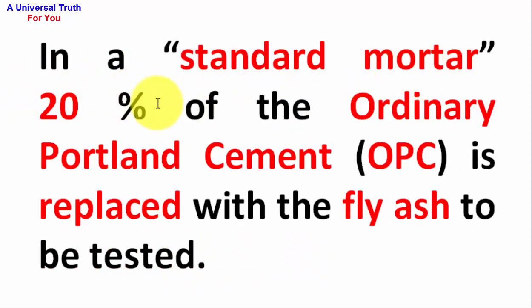In a standard mortar, 20% of the ordinary Portland cement, OPC, is replaced with the fly ash to be tested.